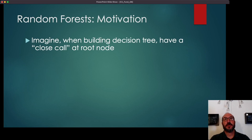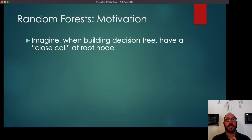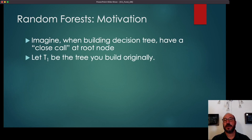So imagine you're building a decision tree, and at that root node you have a very close call between two different variables. Let's say it's age and income. The best split was found at age 28 or lower versus 29 or higher, and that gave you the best split value. But it was also really close if you put income at 75,000 or less versus greater than 75,000 — that also gave a very good split. So first you build the tree that the decision tree algorithm told you to build, choosing the very best split, which was on age, and you build that tree out and call it T1.